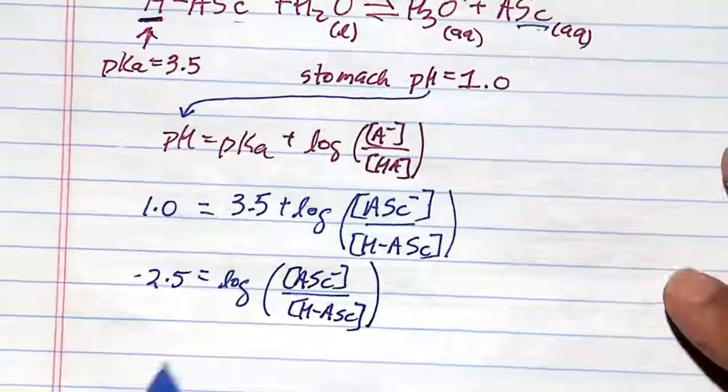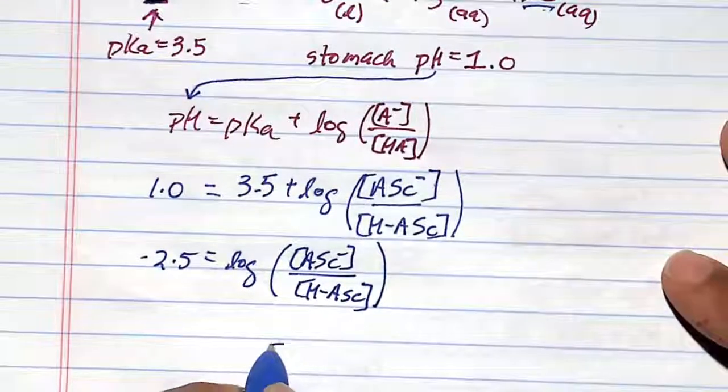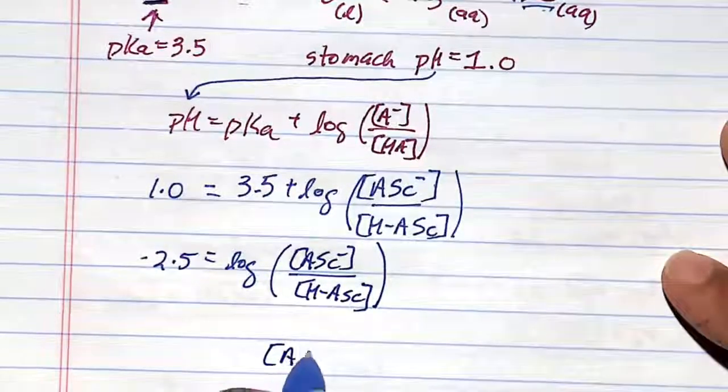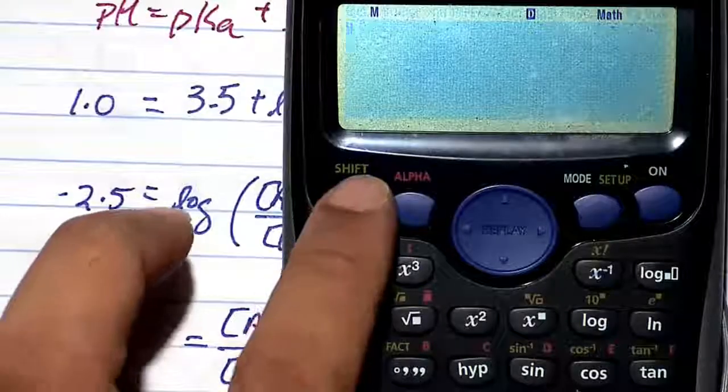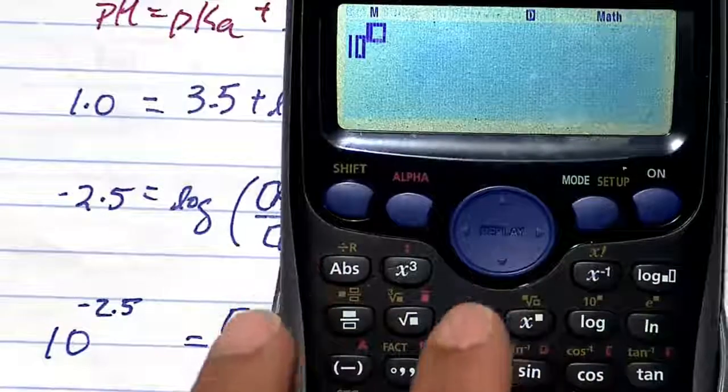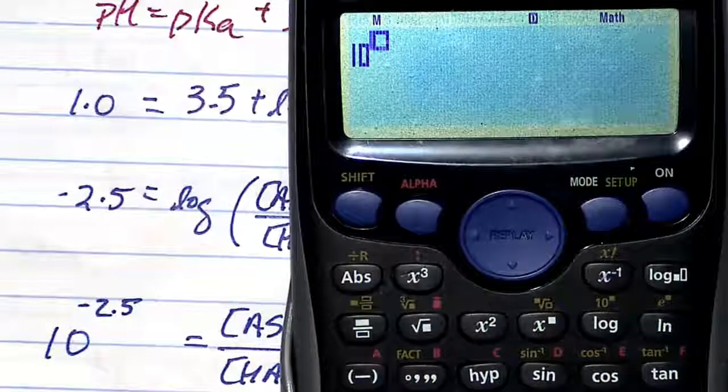We need to solve for this ratio. You're going to take the inverse log. Doing that on my calculator, it's 10 to the minus 2.5.